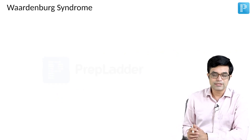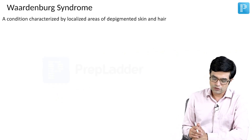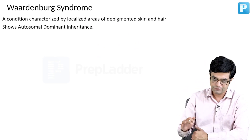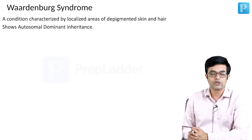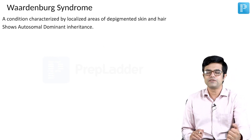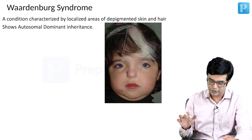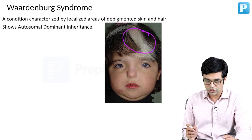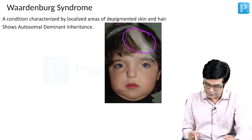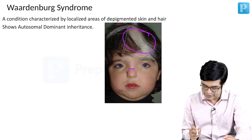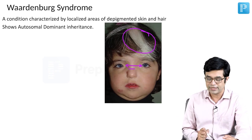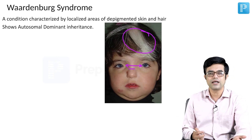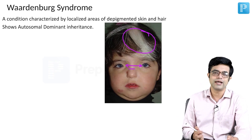The second syndrome we will be discussing is Waardenburg syndrome. Waardenburg syndrome is a condition characterized by localized areas of depigmented skin and hair. It shows autosomal dominant inheritance and multiple types of genes have been described in various sub-forms. If you look at this child, they have a classic white forelock, a broad nasal bridge, and an increased gap between the eyes. This increased gap is not exactly hypertelorism — it is more correctly called telecanthus.